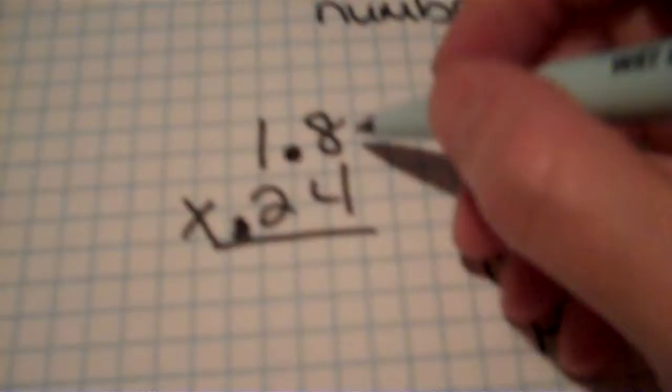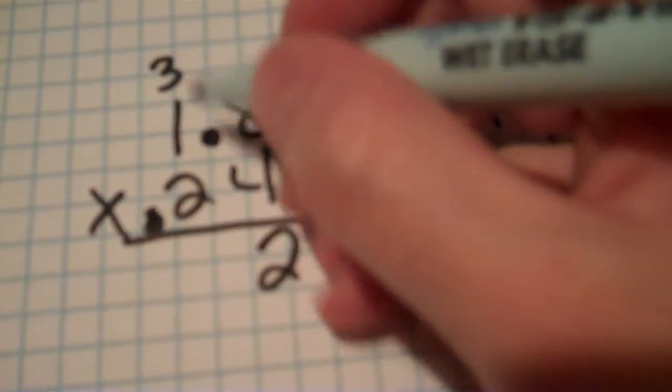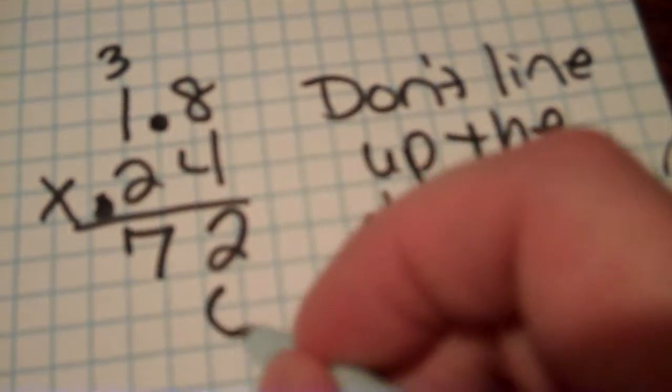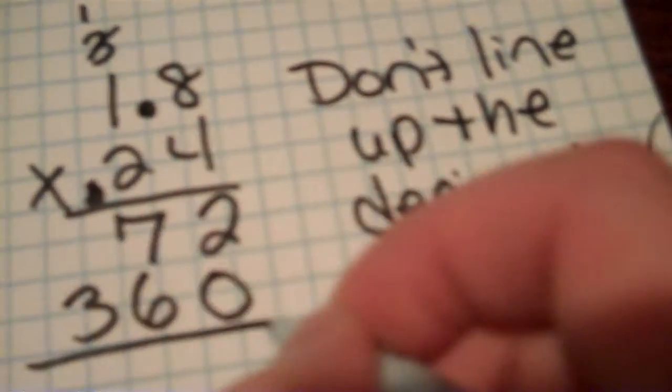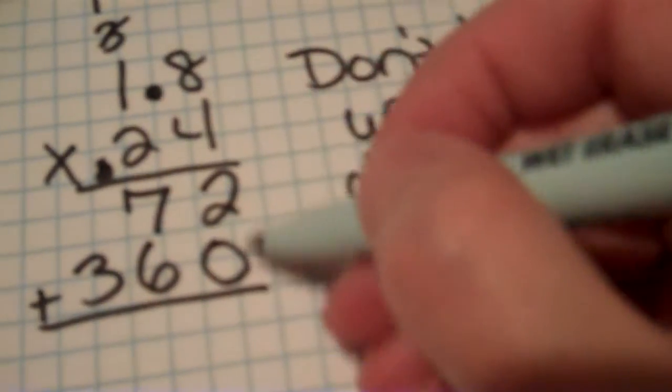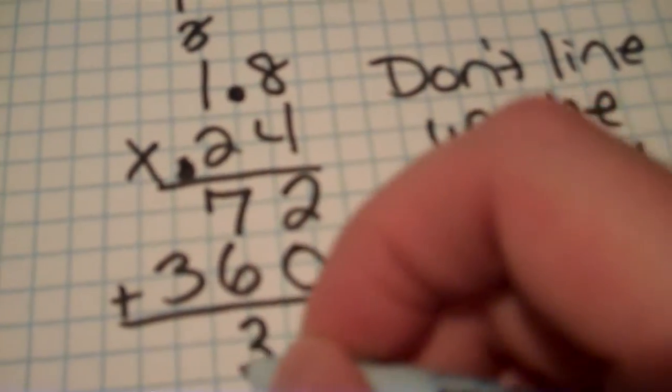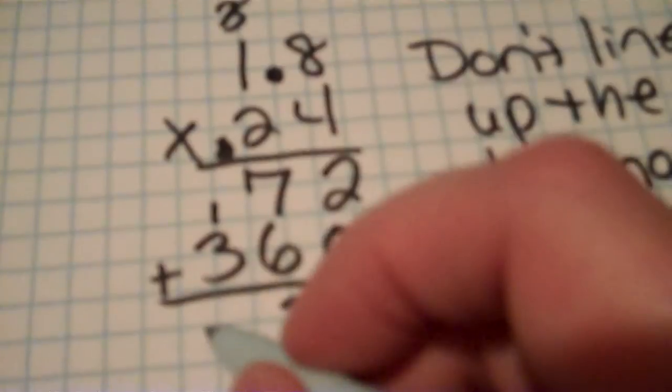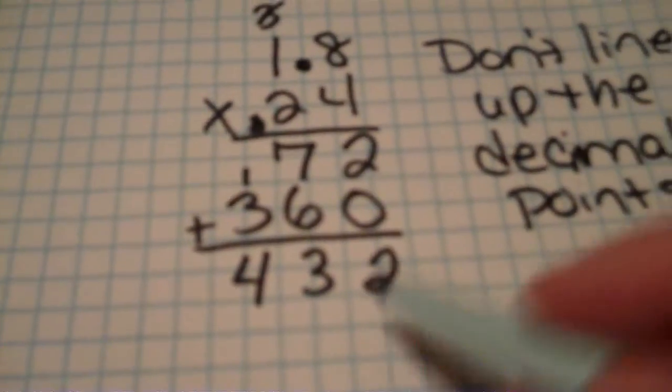So we've got 4 times 8 which is 32, carry our 3. 4 times 1 is 4 plus 3 gives me 7. Placeholder 0. 2 times 8 is 16. Bring down our 6 and carry our 1. 2 times 1 is 2 plus 1 gives me 3. Now remember we're going to add these up. 2 plus 0 is 2. 7 plus 6 is 13. Carry our 1. 3 plus 1 is 4. So I've got 432.